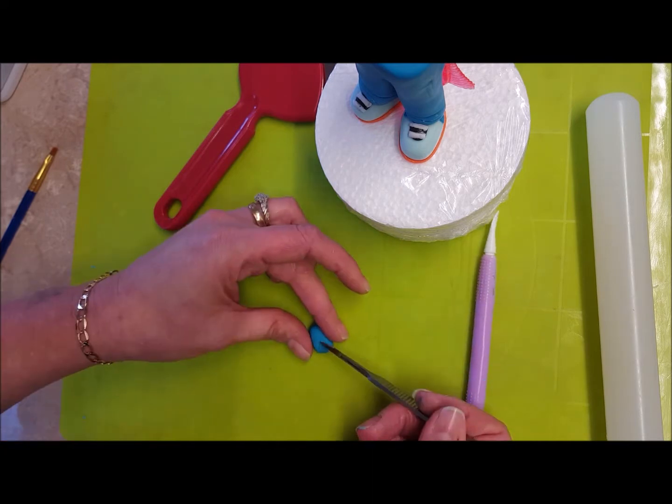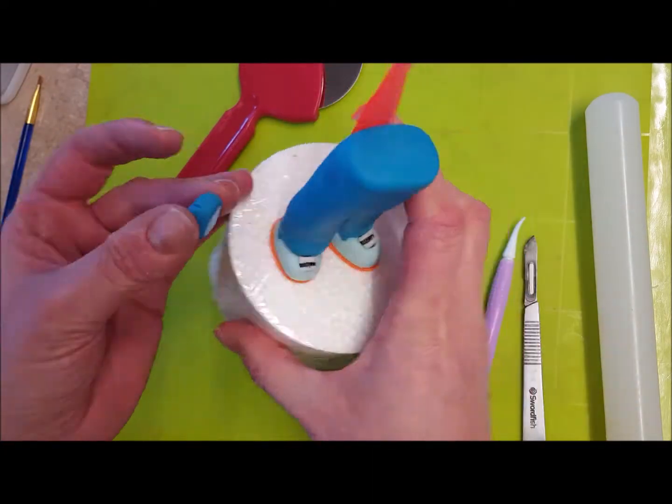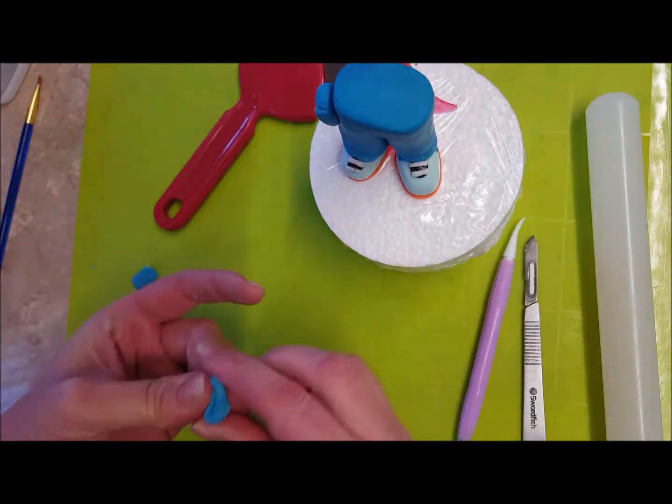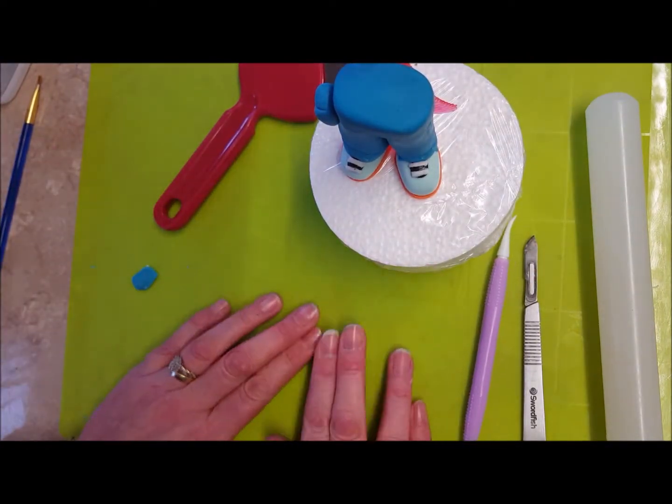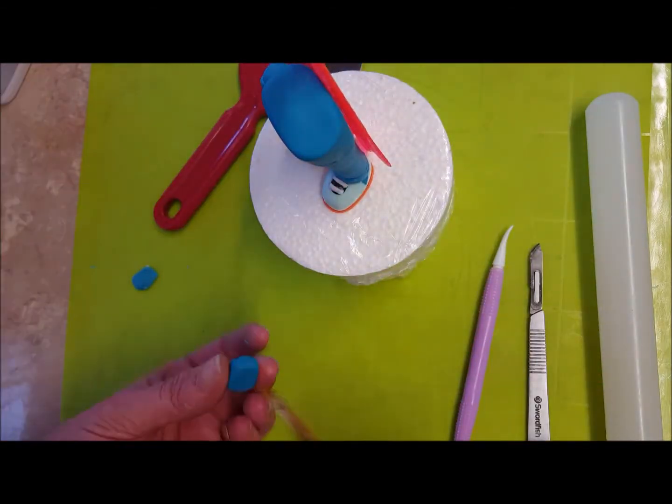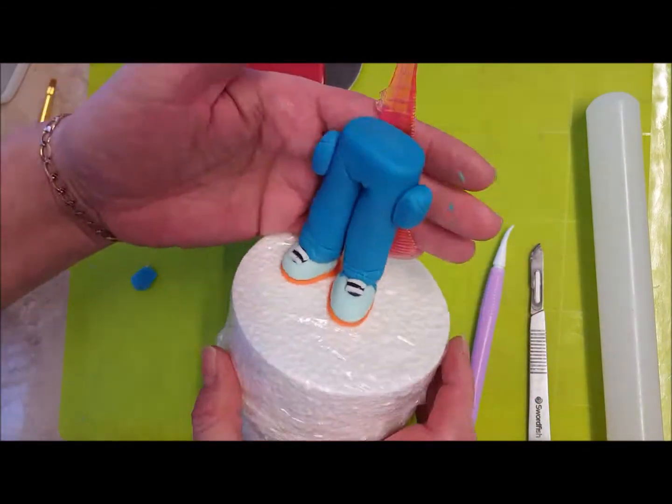You can do the pockets first or you can wait until the next day. Pockets are just little oblong shapes with a bead cut into the top of them, then stuck with a bit of gum glue on the side.